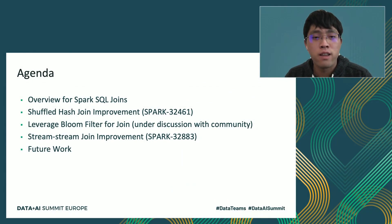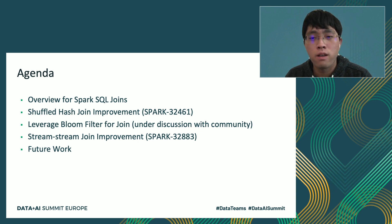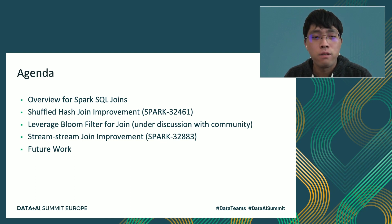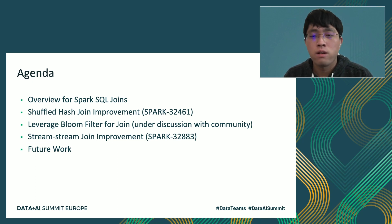Here's the agenda for this talk. We will first start off with a brief overview of Spark SQL joins, and then talk about our improvements around shuffle hash join. After that, we will take a brief discussion for ongoing work to leverage Bloom filter for join. Then we will discuss the improvement around stream-stream join, and finally conclude by showing some of the problems that we are working on in this space.